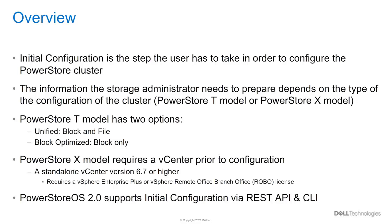The initial configuration wizard will allow the user to configure their cluster. Depending on the type of cluster the user wants to deploy, the user needs to provide certain information. When going through the initial configuration for PowerStore T, the user must select which storage configuration they prefer — either Unified, which provides traditional SAN and NAS capabilities, or Block Optimized, which only provides SAN capabilities.